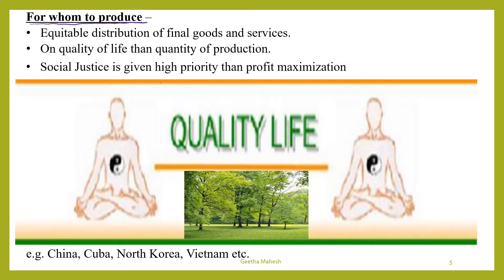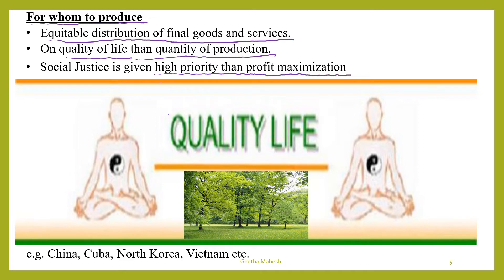Third one is for whom to produce. In a centrally planned economy they are going to produce goods and services for the poorer section of the society, even when production of such goods does not yield a profit. In this economy they give importance to equitable distribution of final goods and services, and they give more importance to quality of life rather than quantity of production. Social justice is given higher priority rather than profit maximization. Good examples of centrally planned economy are China, Cuba, North Korea, Vietnam, etc.